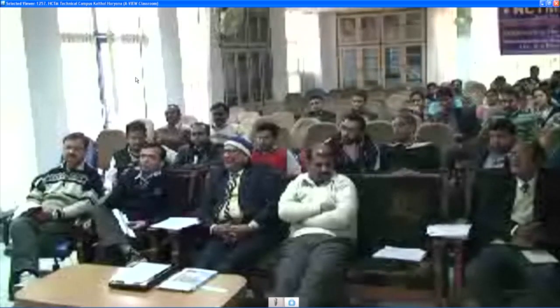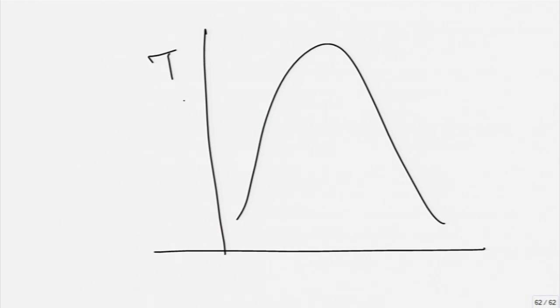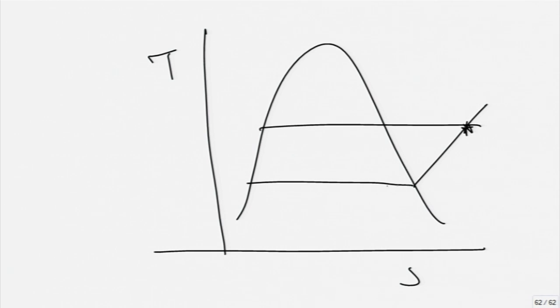At what point are dew point temperature and dry bulb temperature the same? On the T-S diagram, if you draw the pressure line and your temperature is on the dome, then your dew point temperature and dry bulb temperature would be the same. If you are 100 percent saturated, your actual temperature is the same as the dew point temperature. You cannot cool it any further because it will immediately start condensing out.